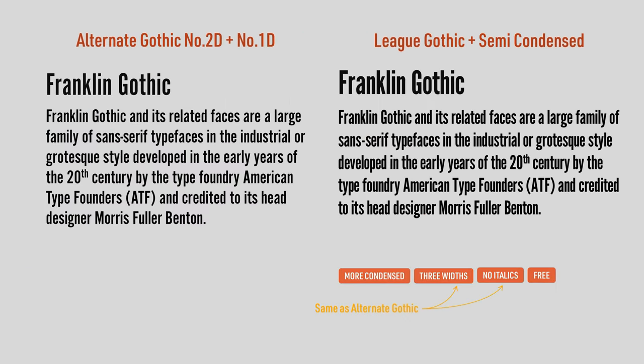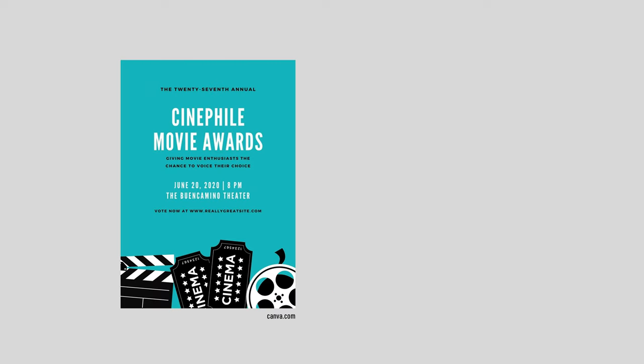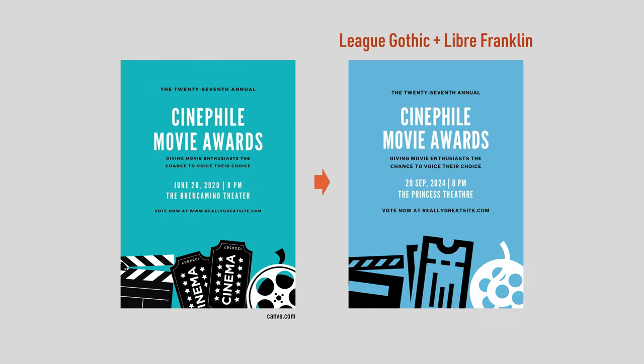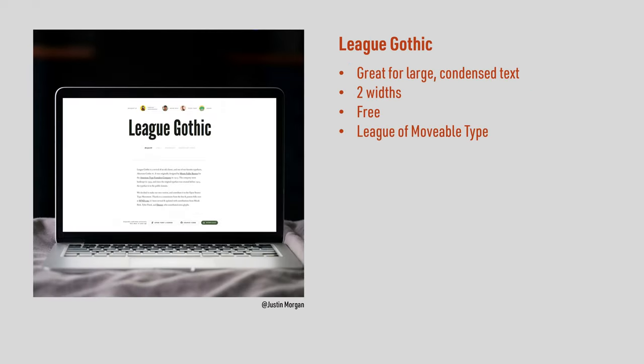If you're after a more compressed font, which would be an alternative to Alternate Gothic, your best bet is League Gothic. You would never use this in a text block, so let's look at a simple poster example. The original design itself used League Gothic, so that worked out nicely. I paired my copy with Libre Franklin, so you can see how well the two work together. League Gothic is great for large condensed text. It comes in two widths, one of which is even more condensed, and you can download it from the League of Moveable Type website.